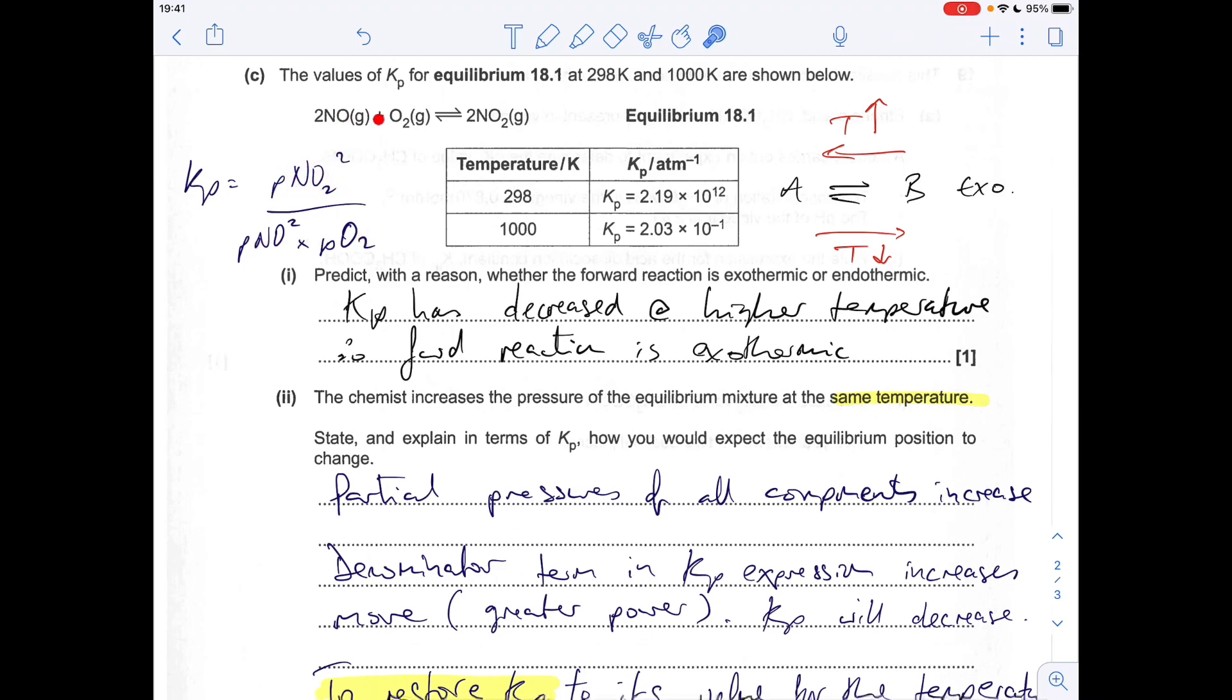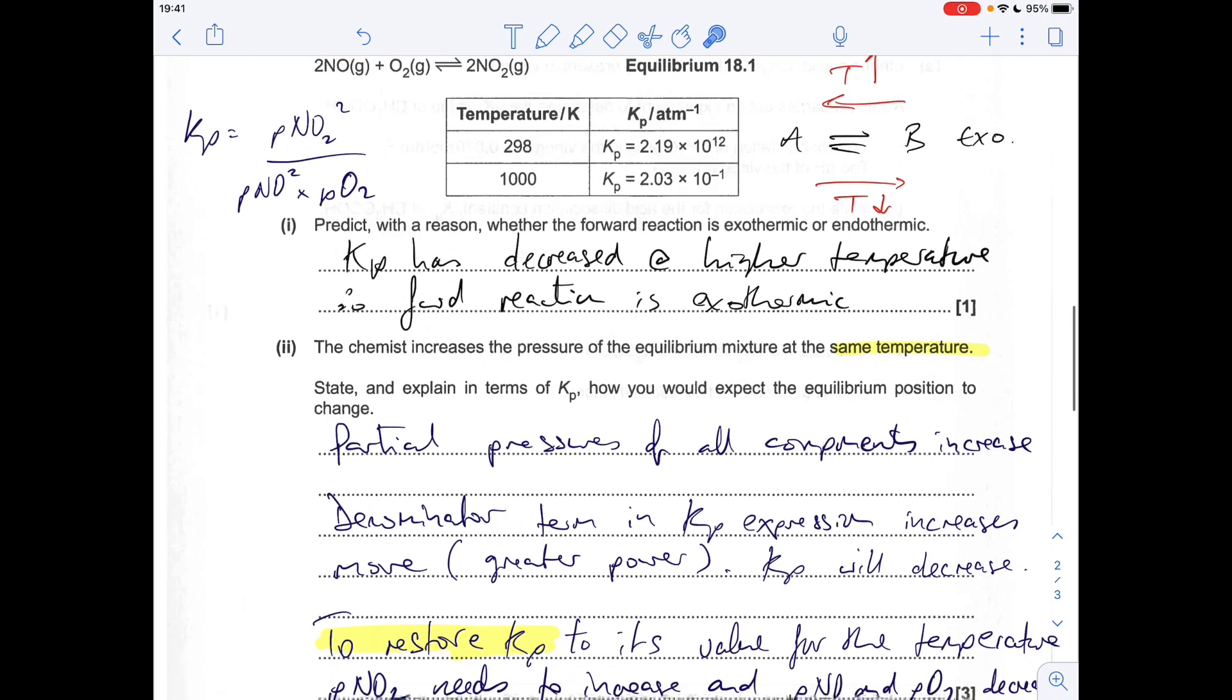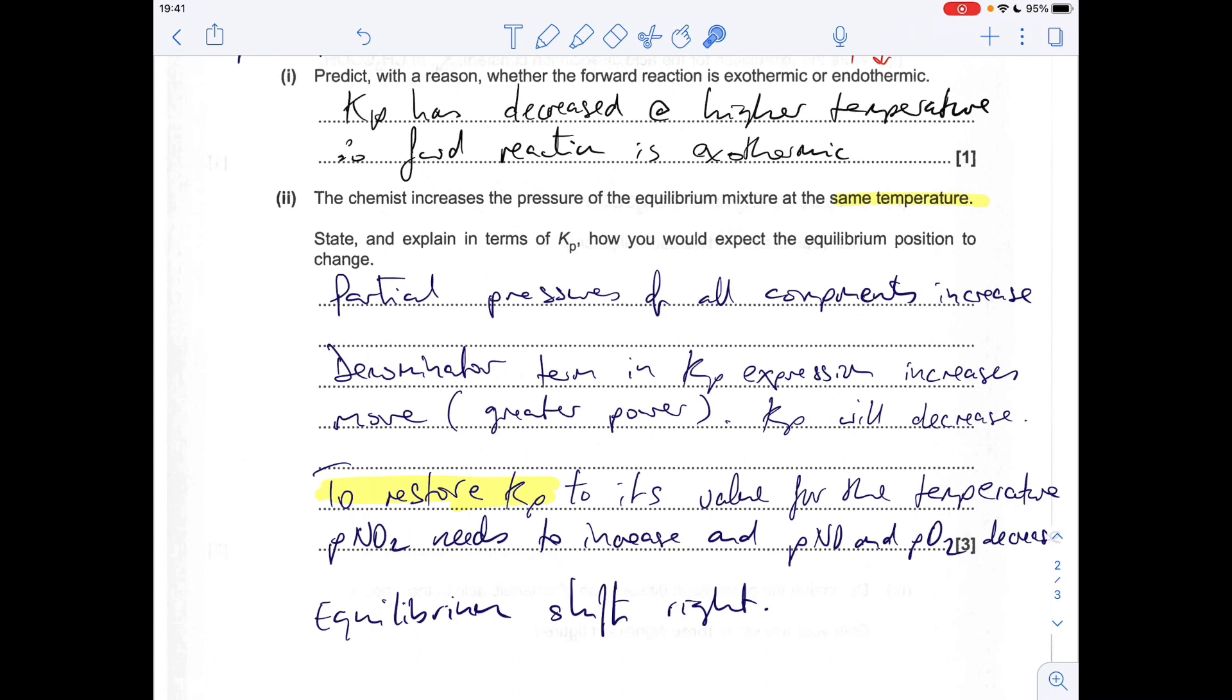How does it make the partial pressure of NO₂ go up and the partial pressures of these go down? It moves forward, it shifts to the right. To restore Kp to its value for the temperature, the partial pressure of NO₂ needs to increase and the partial pressures of NO and O₂ decrease, and the equilibrium does that by shifting to the right.